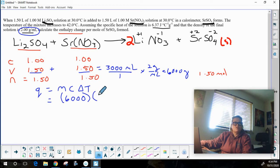The specific heat is going to be higher because the solution is denser. So it's going to be 6.37 joules per degree Celsius per gram.